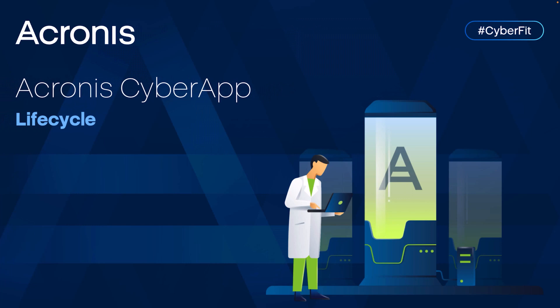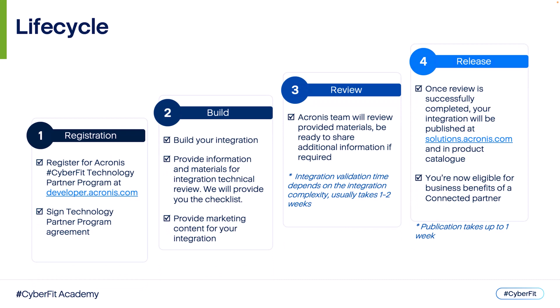Let's see how the lifecycle of the Acronis Cyber App looks like. Preparation Step — Discovery: identify the integration type and scenarios. Each integration begins with integration type identification and the scenarios it aims to support. To help identify the integration type and scenarios, the following questions can be used: What is the purpose of the application? What features does the application provide to its users? Does the service need the platform data for its own use? What customer data will be processed by the application? Step 1 — Registration: register for the Acronis Partner Program on developer.acronis.com, sign the Partner Program Agreement, and get access to the Vendor Portal and other resources — videos, documentation, etc.